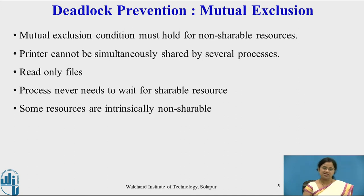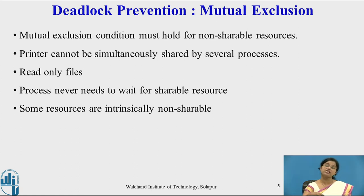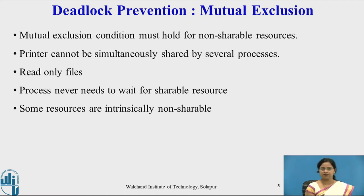Sometimes some resources are non-shareable, so mutual exclusion cannot be prevented simply by making all resources shareable. The assumption for mutual exclusion prevention is to make resources shareable where possible. But since some resources may inherently be non-shareable, the guideline is to keep the minimum number of non-shareable resources in the system.